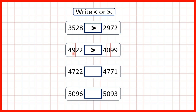So because this first number has more hundreds, we know that it must be larger. Now, 4722 and 4771. We start by comparing the thousands, but because they're the same, we move along to the hundreds. Now here, they both have seven hundreds — the same number of hundreds — so we move along to the tens, and because this second number has more tens, we know that this number here is the larger number.